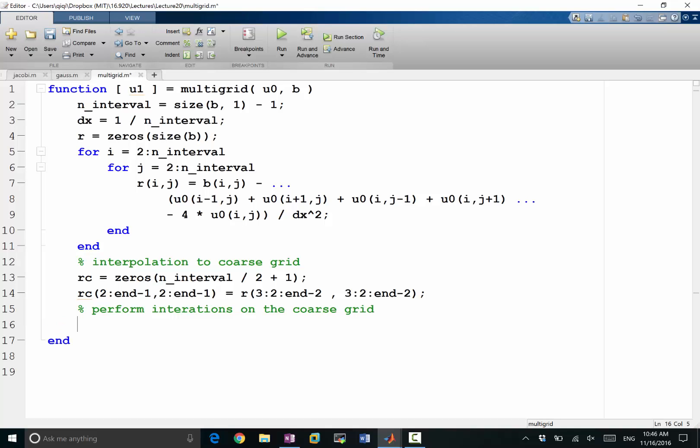So it's usually good just to perform a few iterations. Let's make a coarse grid du, so that's the correction on u. Let's do zeros the size of rc. We'll make initial guess equal to zeros and let's do 10 iterations. Let's use the Gauss-Seidel iterations, so du is equal to gauss_seidel of du and my rc.